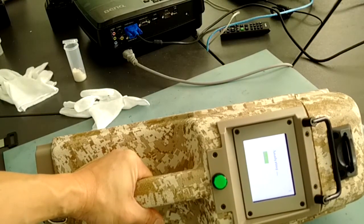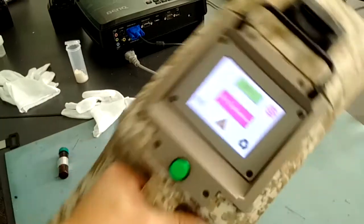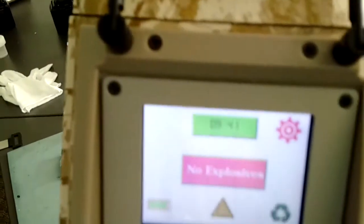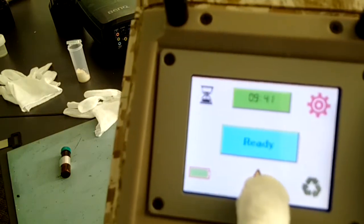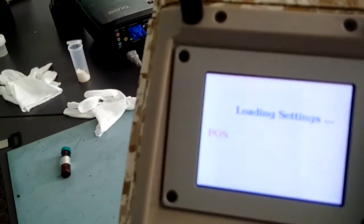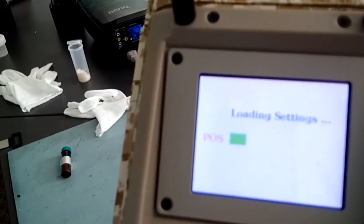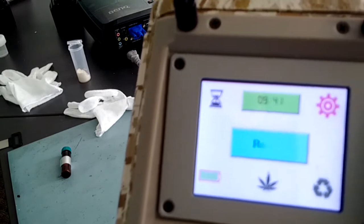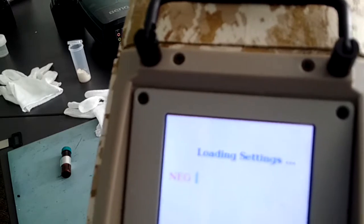It will provide you with a visual message showing either no explosive found or threat found. You can also change between explosive mode to narcotic mode, and it takes about five seconds to switch from one mode to another. Then you can do your sampling in narcotic mode. Let me just right now switch back to explosives.